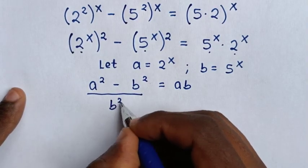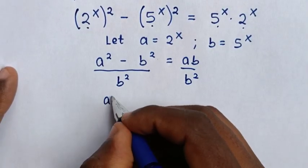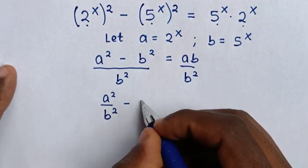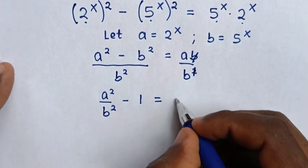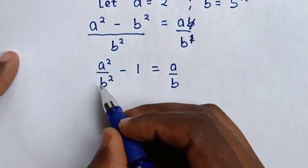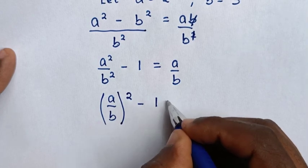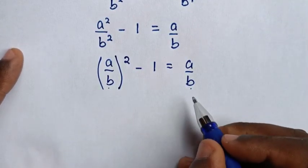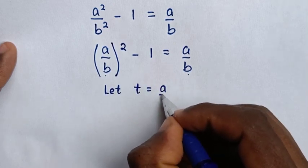We divide by b squared on both sides. So it will be a² over b² minus b² over b² — which is 1 — equals a over b. Since the square is common on the left, it becomes (a/b)² minus 1 equals a/b. We let t equal a over b.